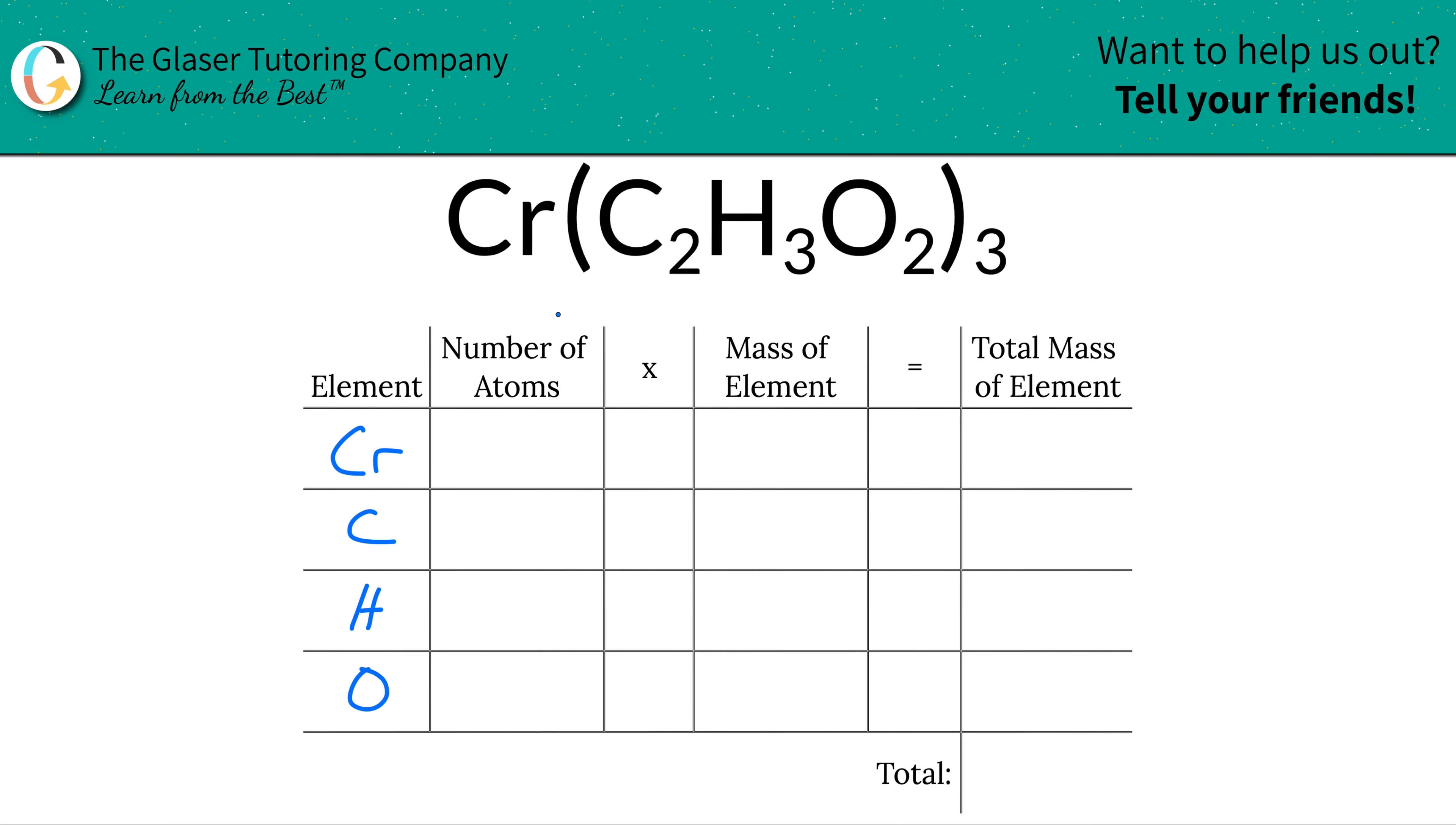Next is to write down the number of atoms of each, and that's where the subscripts come into play. For chromium, there's an invisible one there, so that means there's one chromium atom. For carbon, there's two carbon atoms, but that's in one acetate. You have three of them, three of those acetates, so therefore you would have a total of six carbons. All you have to do is take that subscript of carbon and multiply it by the outer subscript to find the total. So that would simply be six carbons.